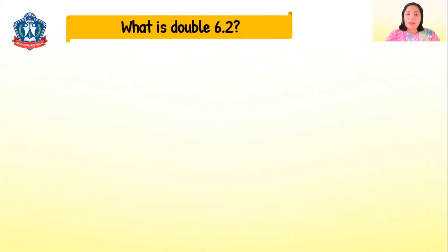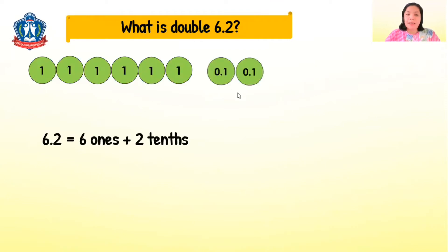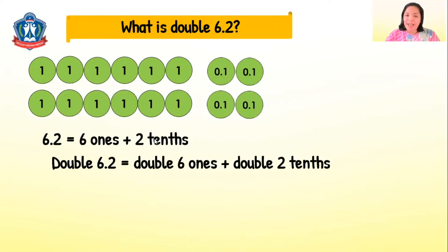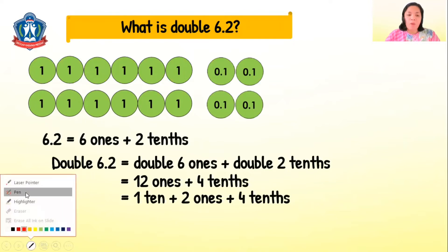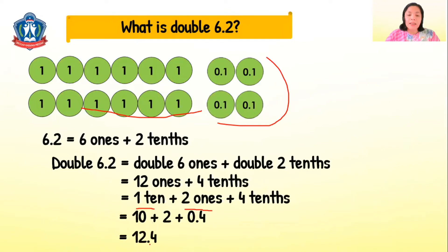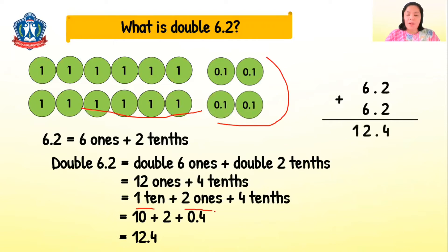What is the double of 6.2? 6.2 is 6 ones and 2 tenths. To find the double, we double the 6 ones and double the 2 tenths. Double 6 ones is 12 ones, and double 2 tenths is 4 tenths. 12 ones equals 1 ten plus 2 ones, so that is 10 plus 2 plus 0.4, giving us 12.4. Another way: simply add 6.2 plus 6.2, which also equals 12.4.